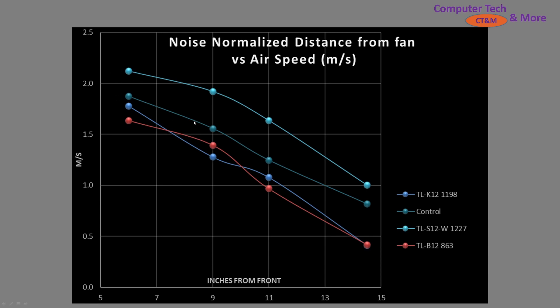The control fan is the teal line. The blue line is the TLK12, which lines up very closely with the TLB12—a fan known for performing very close to the A12X25.